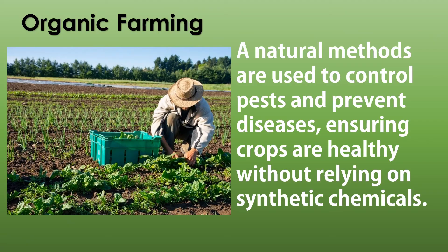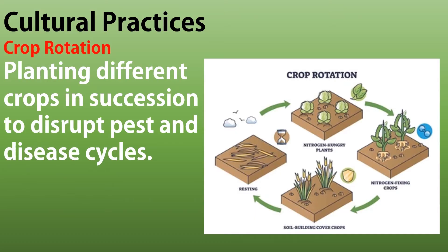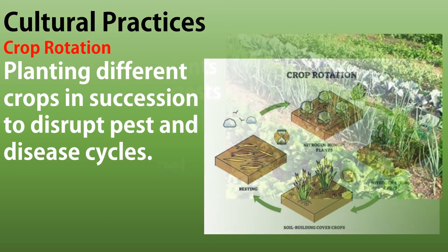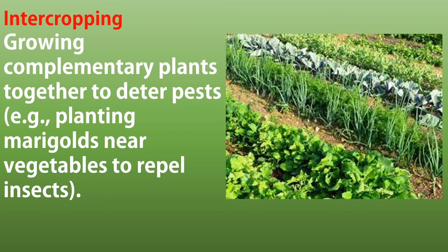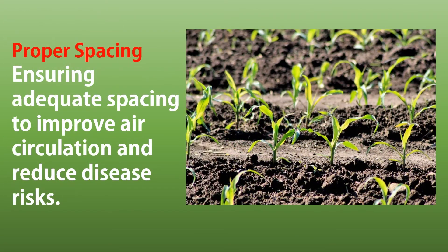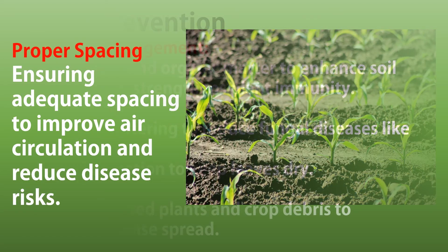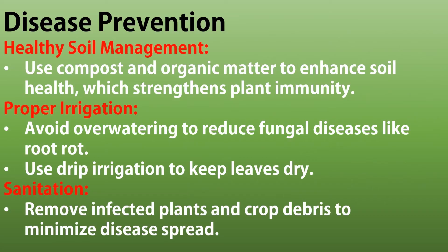In organic farming, natural methods are used to control pests and prevent diseases, ensuring crops are healthy without relying on synthetic chemicals. These methods include crop rotation — planting different crops in succession to disrupt pest and disease cycles — and intercropping, such as planting marigolds near vegetables to repel insects. Proper spacing improves air circulation and reduces disease risks. Healthy soil management through compost and organic matter boosts plant immunity. Proper irrigation prevents root rot, and sanitation — removing infected plants and clearing debris — stops the spread of harmful pathogens.